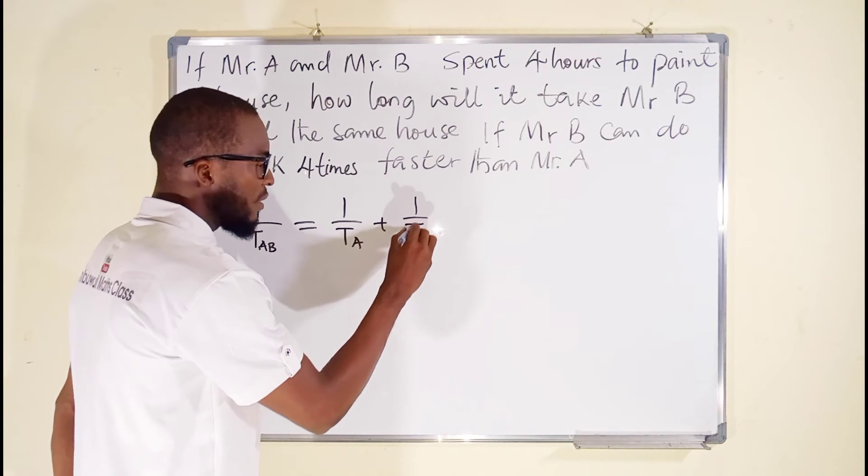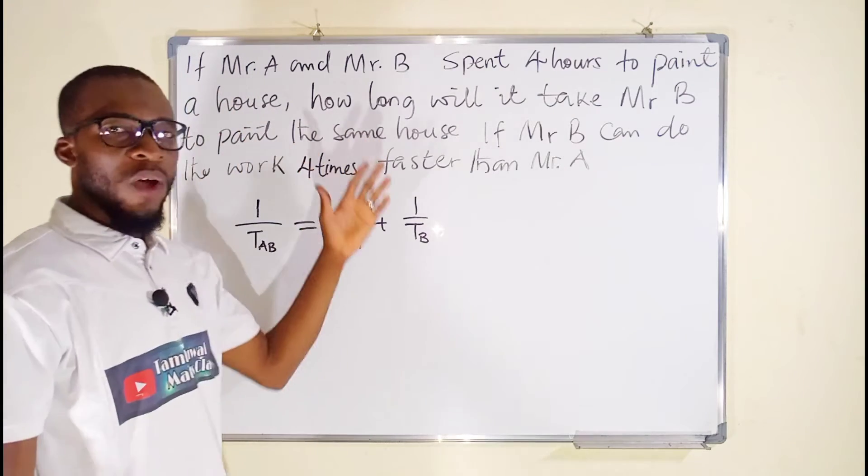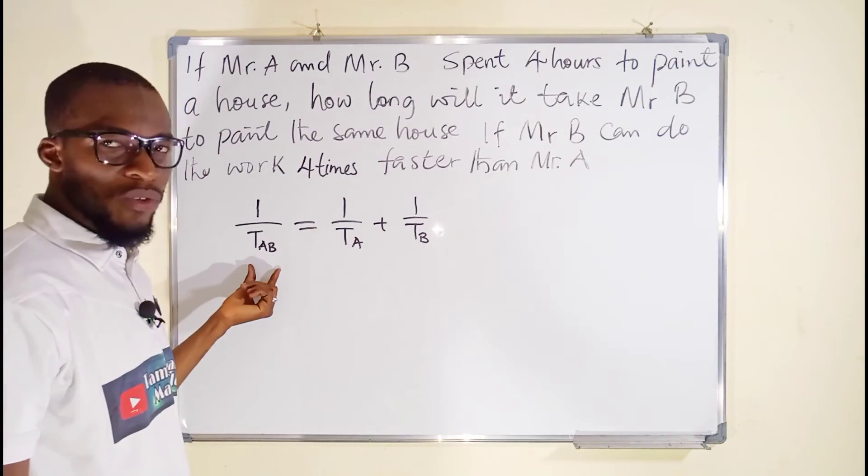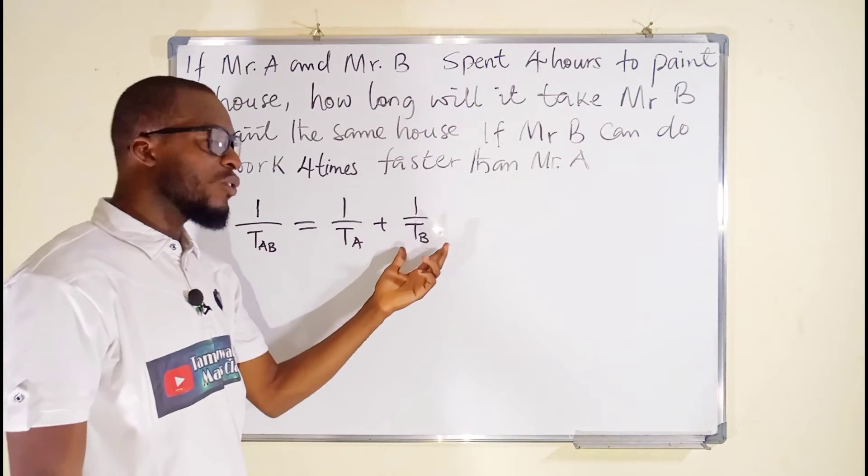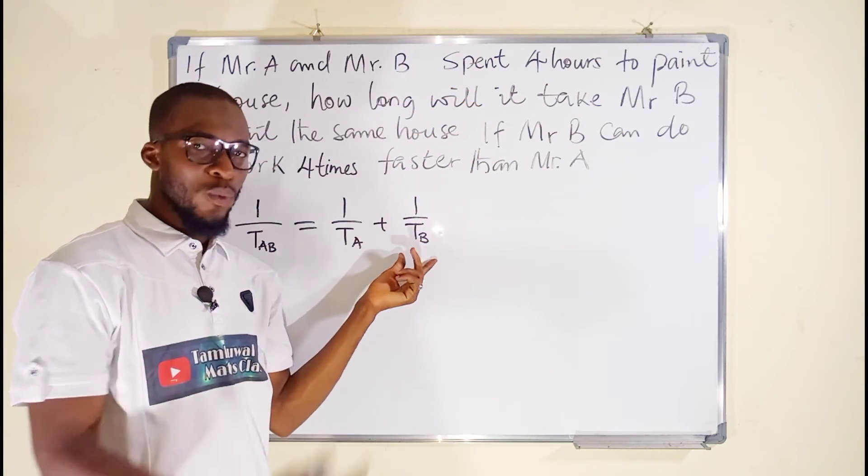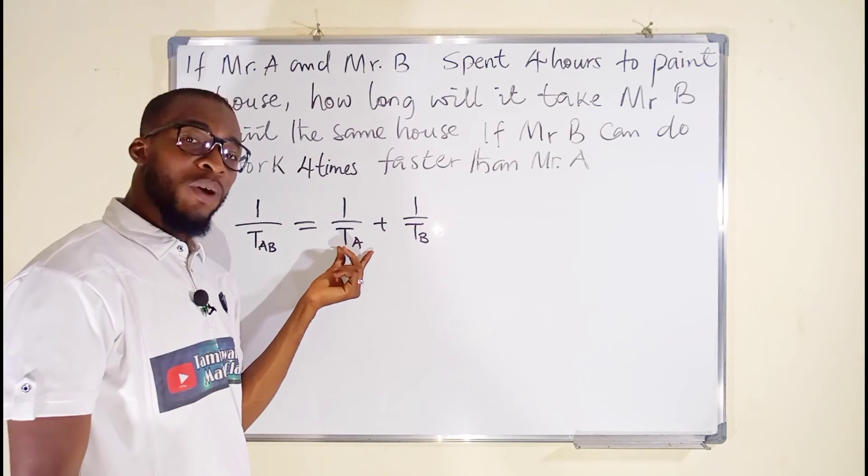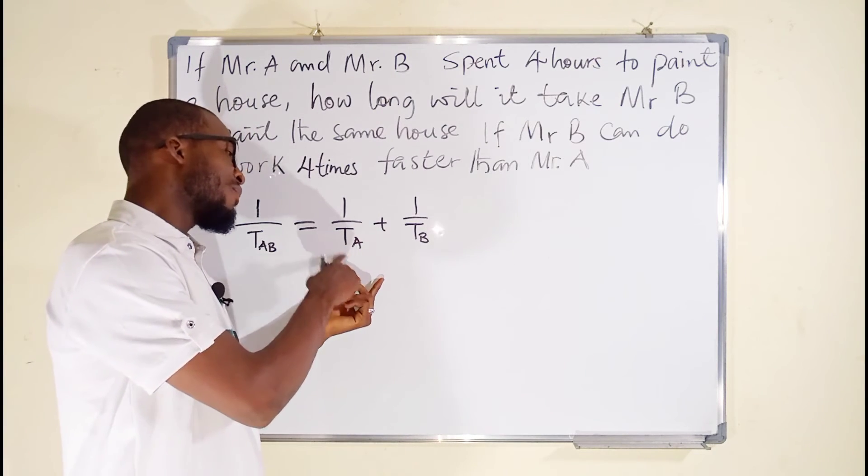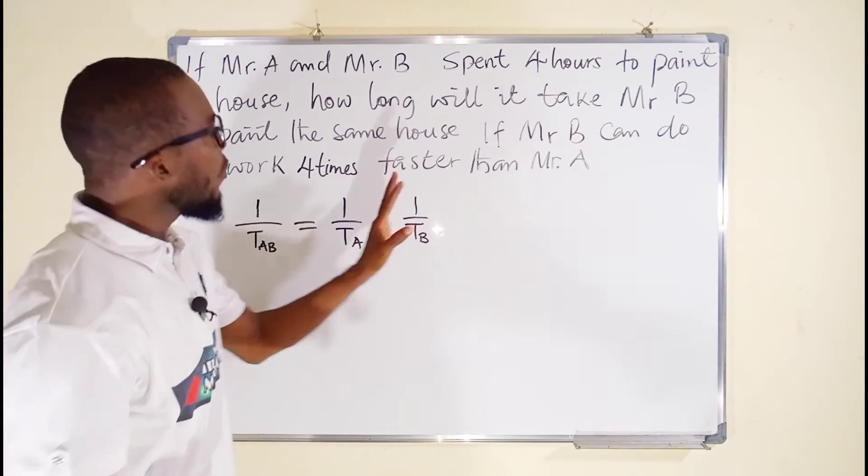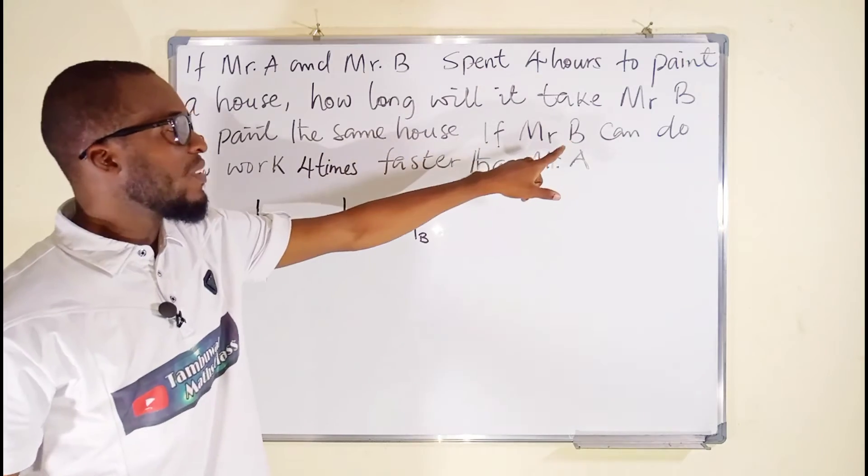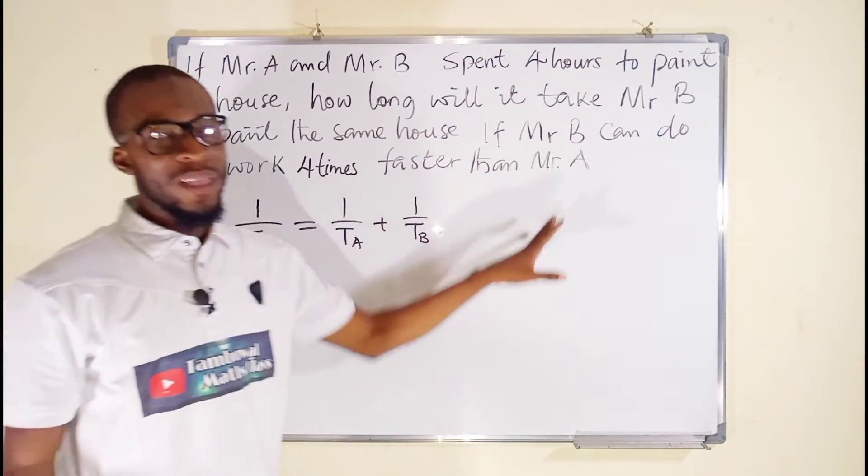But in this question, we are only given the time taking them to work together, which is four hours, and we are asked to find the time taking Mr. B to do the work. So how can we find the time taking Mr. A to do the work? Because we have to find this time before we can find the time taking Mr. B to do the work. But we learned from the question that Mr. B can do the work four times faster than Mr. A.